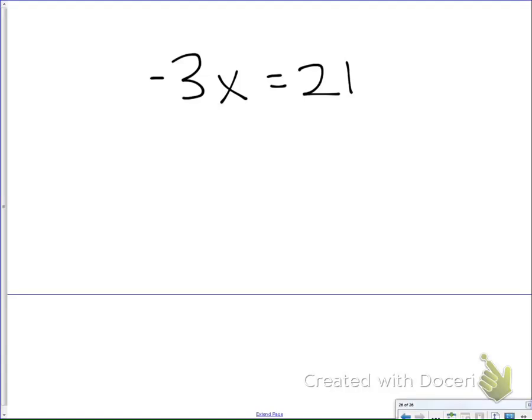Okay, so I want to talk about one-step equations again, but today we're going to look at multiplication and division. Okay, so all we're going to be looking at is how to undo our division and our multiplication problems. So first one I want to look at is this problem here. We have negative 3x equals 21.